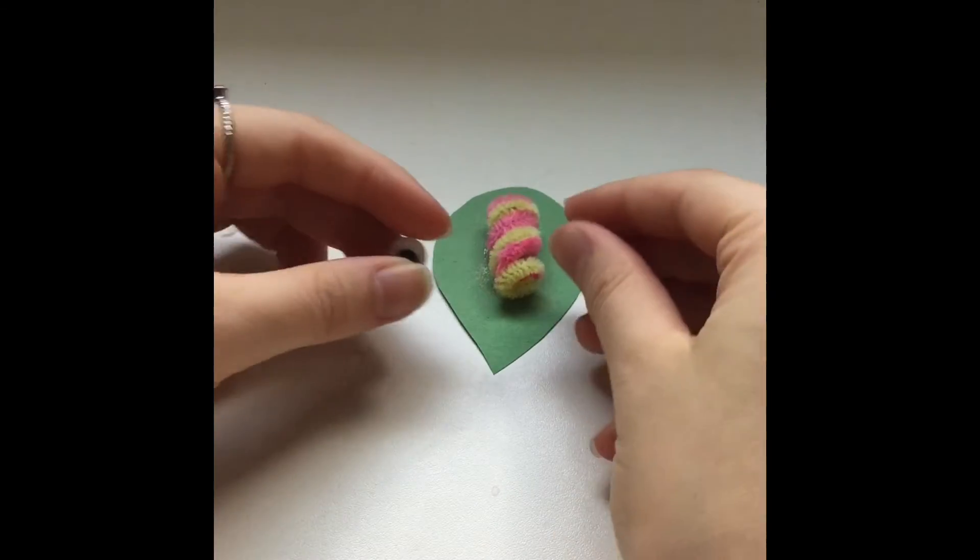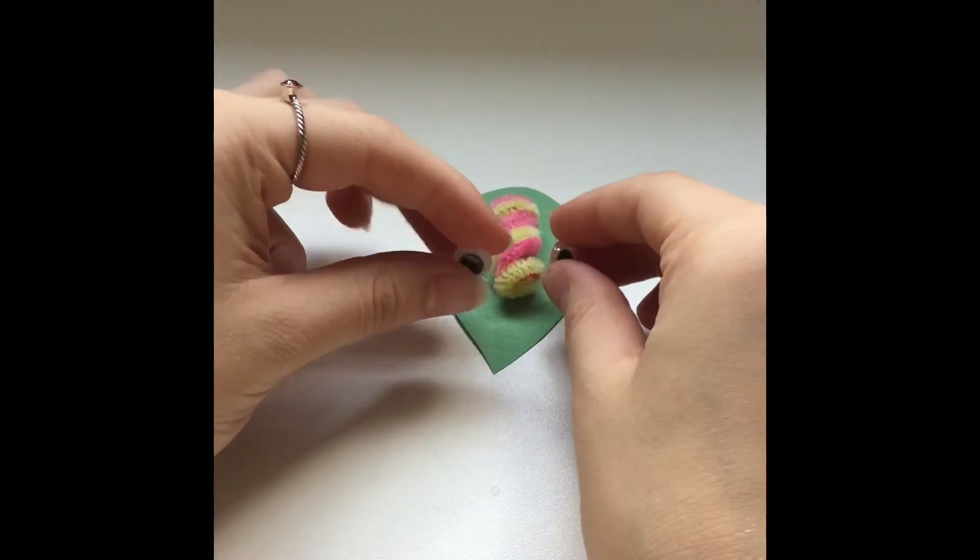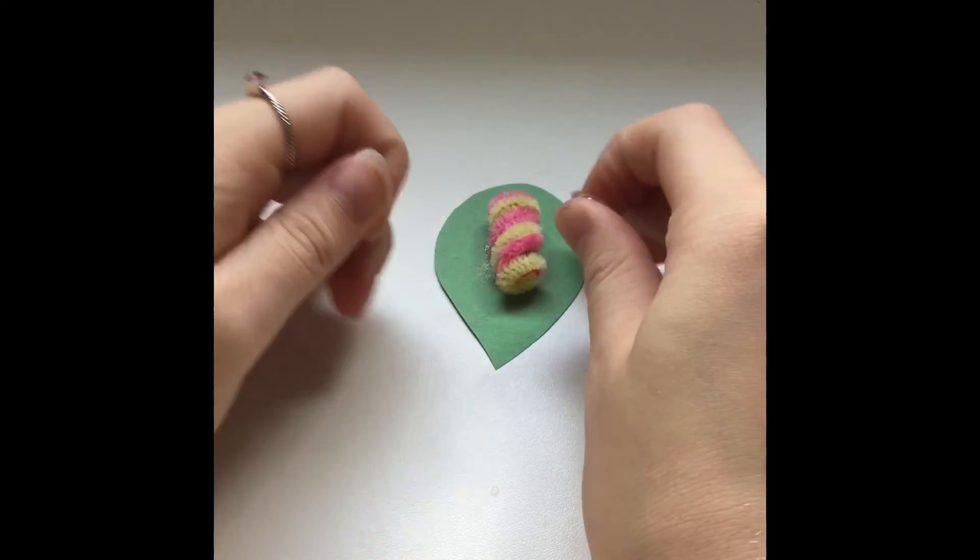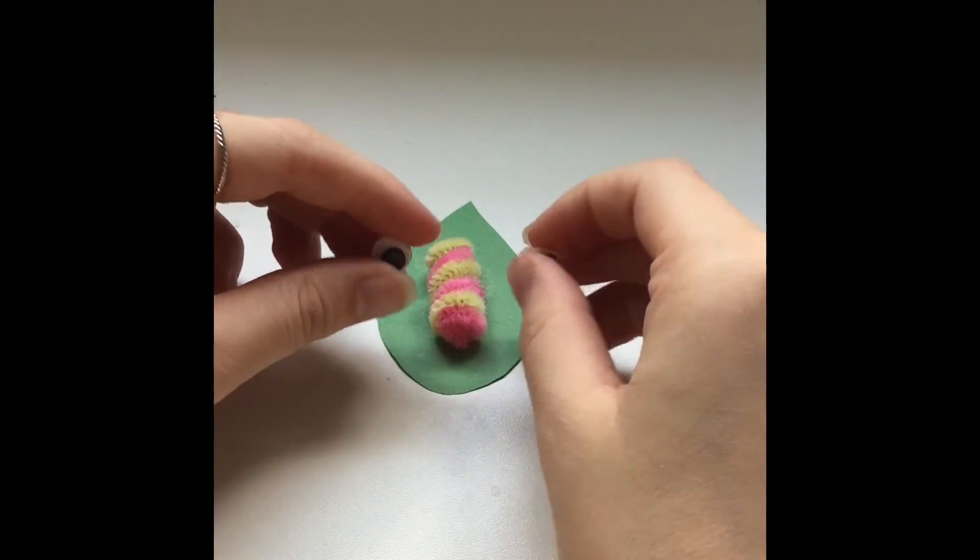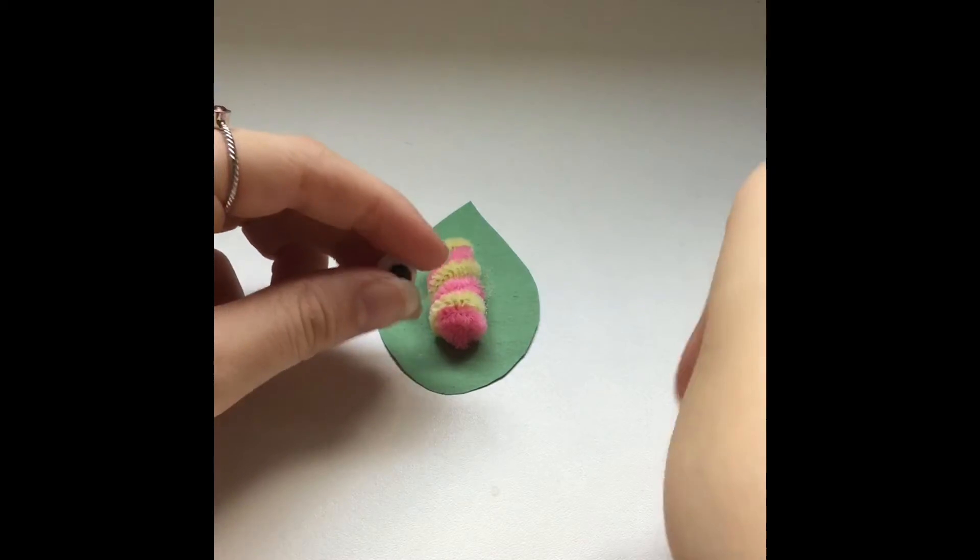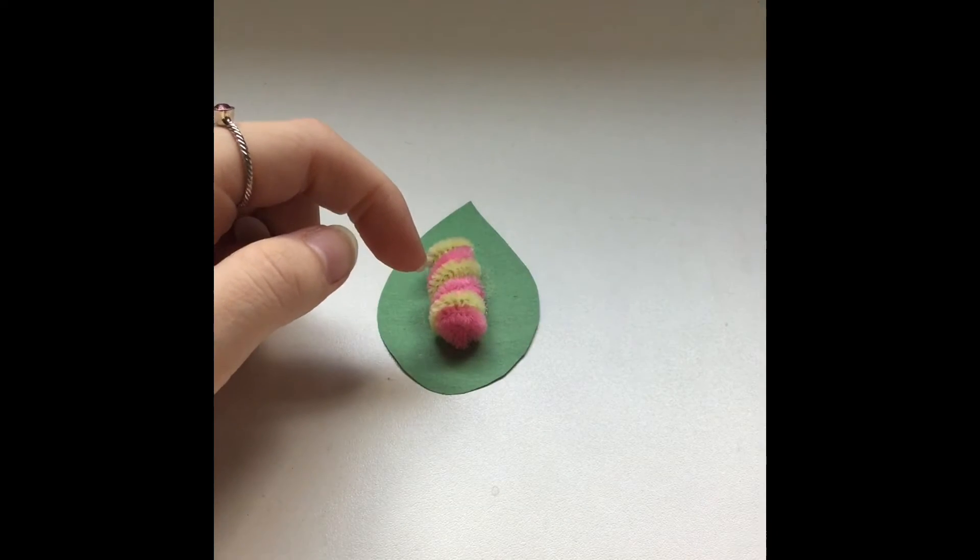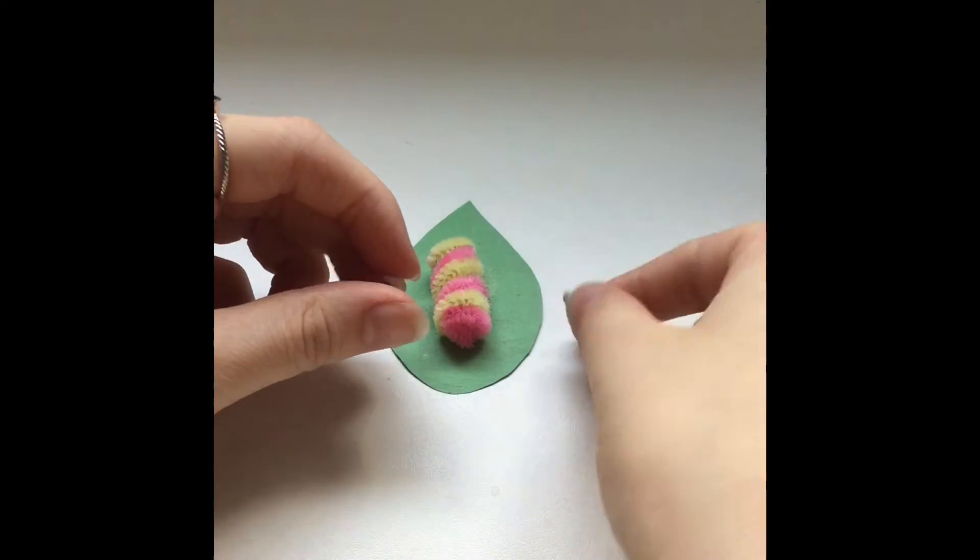Once you finish gluing your caterpillar, you can take your two googly eyes and put them on each side of the caterpillar's head. It does not matter which side you use for the head. You can also put them on this side. And then once you finish gluing, you just take your safety pin and stick it to the opposite side from where you put the eyes on.